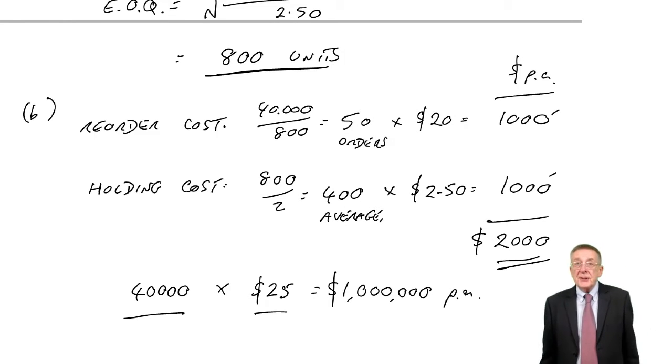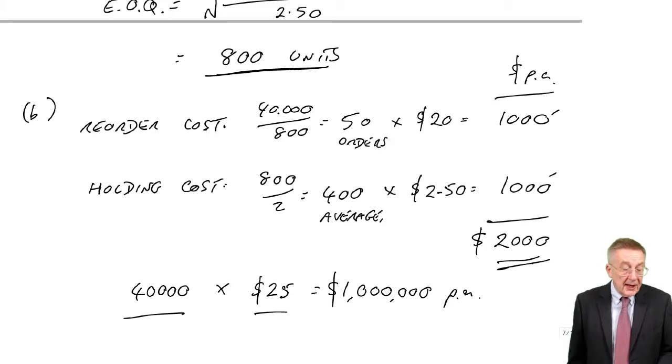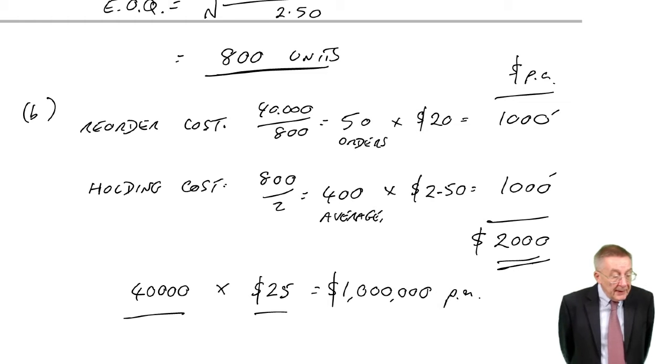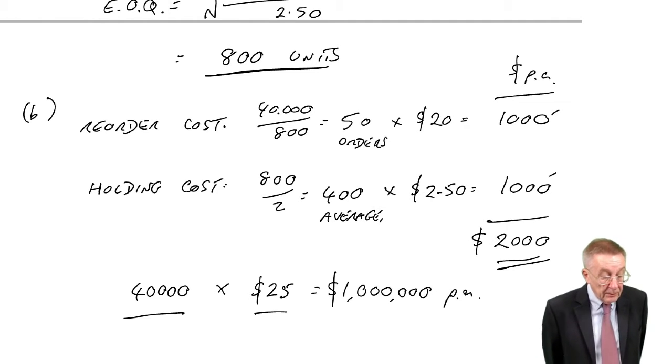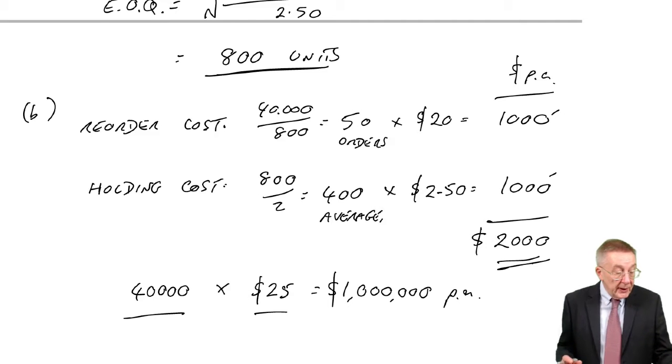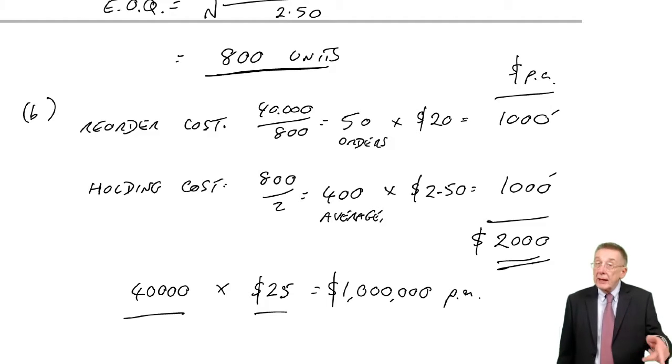However, there is one case where we'd have to look at the purchase cost, and that's when you get quantity discounts. Turn to example 3. For the information given in example 1, the supplier now offers discounts on purchase price as follows: if we order between 0 and 5,000 each time, we get no discount. But if we order 5,000 or more, we'll have a 1% discount. 10,000 or more, we'll get a 1.5% discount.